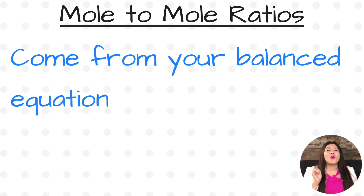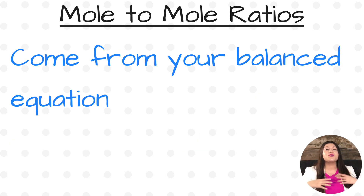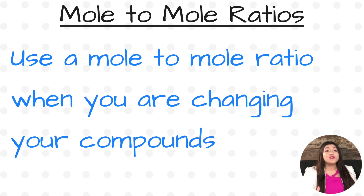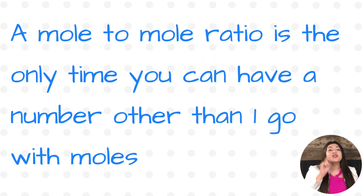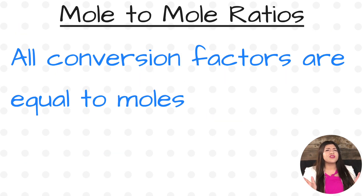The third type is mole-to-mole ratios. The numbers for mole-to-mole ratios come from your balanced equation. You know to use this whenever you are changing your compound. For a mole-to-mole ratio, that is the only time you could have a number besides one going with your moles. Notice that all conversion factors are equal to moles.